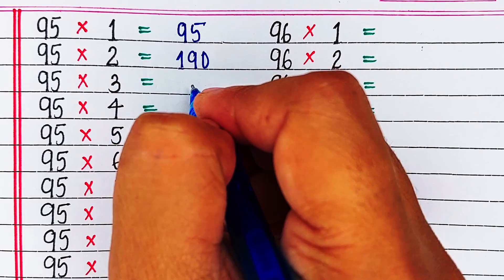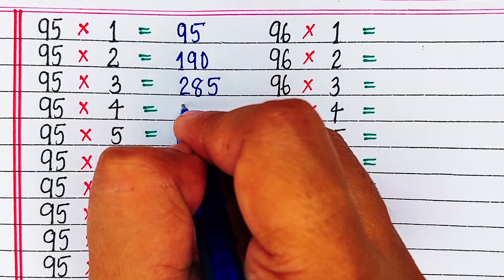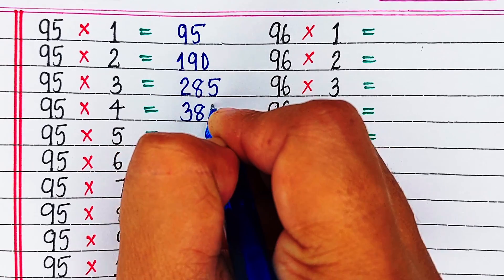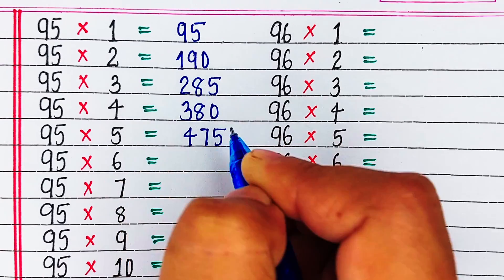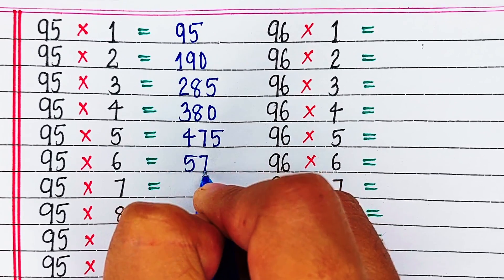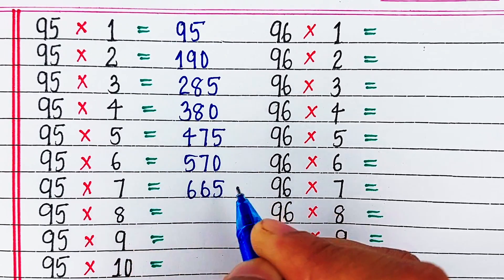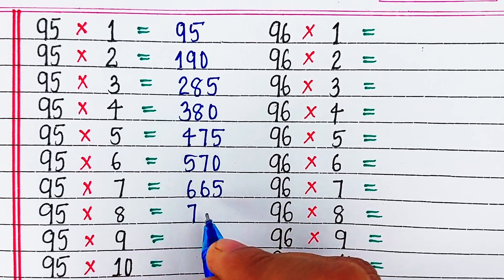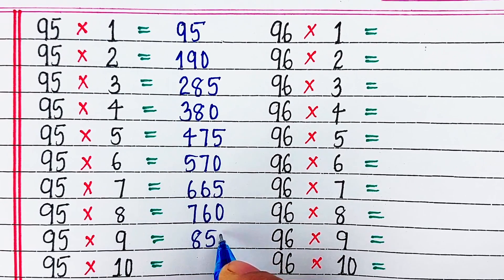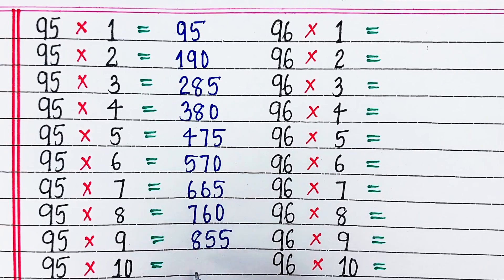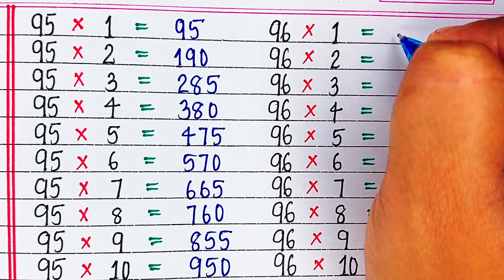Next is table of 95. 95 ones are 95. 95 twos are 190. 95 threes are 285. 95 fours are 380. 95 fives are 475. 95 sixes are 570.